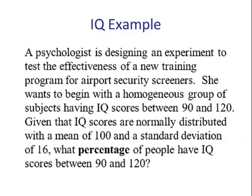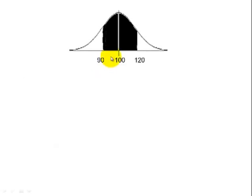Our first step is to draw a picture. Here's 90, there's 120, and we have a mean of 100. Now this is an in-between problem, so we have to convert this to a z-score and the 120 to a z-score.